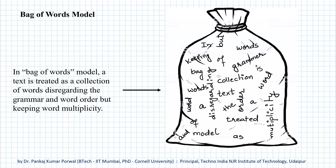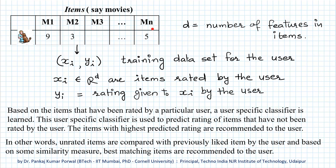Let's assume that there are d features in each of the items. That constitutes our training dataset for that user to train a user-specific classifier. We use a classification model where we not only get like or dislike classification, but we also get the probability of liking or disliking — like a Bayes classifier, logistic regression, or a neural network. Using that probability, we can get a numerical rating that a user will give to a particular item, and we use this user-specific classifier to predict ratings of items that have not been rated by the user.